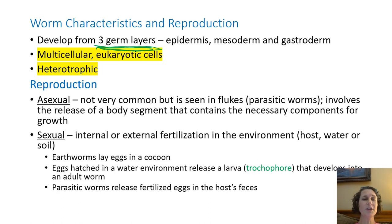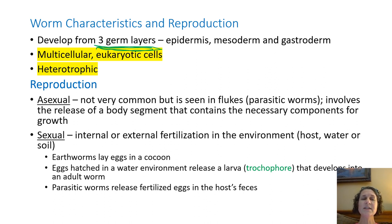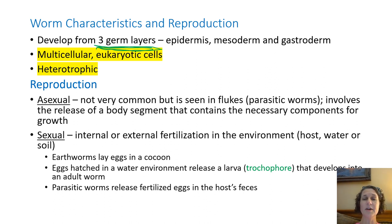As far as reproduction goes, we'll go through the highlights. Some of them can reproduce asexually — it's not very common, but it is seen in some of the flukes, which are parasitic worms. It basically just involves the release of a body segment. That body segment contains everything necessary for growth: genetic material, some proteins, some of the amino acids that are needed, and so they are essentially making copies of themselves.